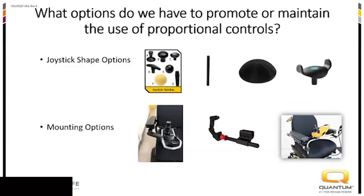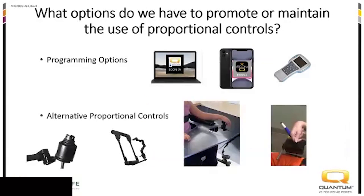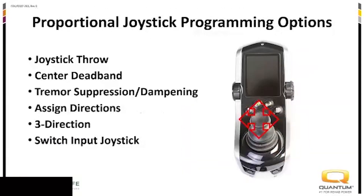Options to promote and maintain the use of proportional controls include joystick shape options, mounting options, programming options, and alternative proportional controls. For the standard joystick, programming features include changing the distance the person has to push the joystick for a full command, center deadband and tremor suppression or dampening for impaired motor control or tremors, and reassigning directions.